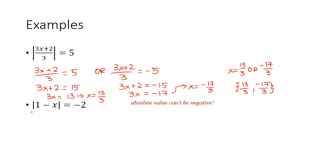Finally, let's look at the next example. We have absolute value of 1 minus x equals negative 2. But the absolute value of anything can never be negative. So therefore, right away, you have no solution.